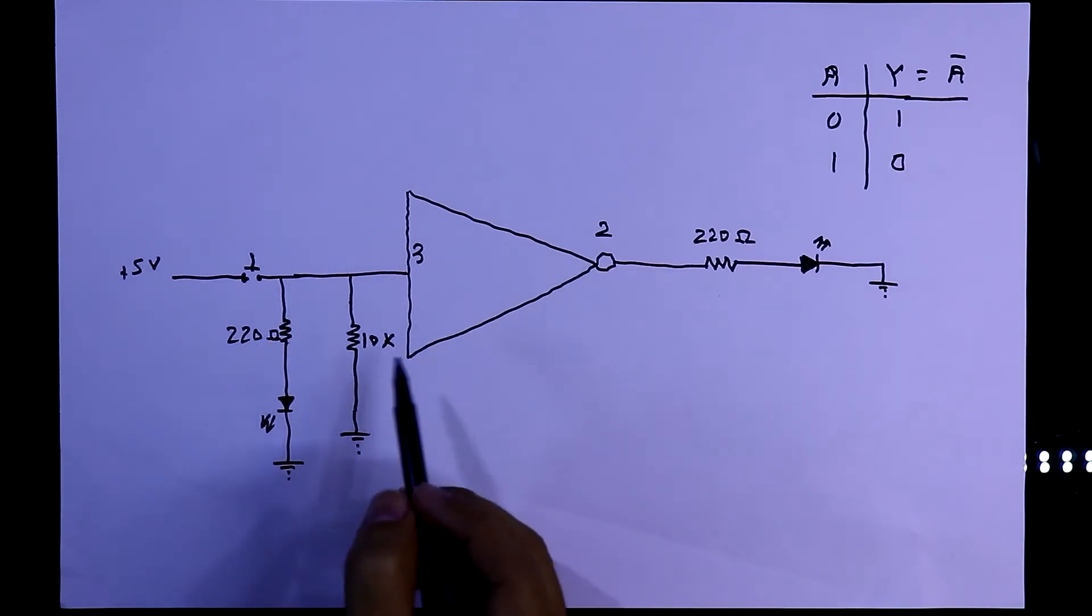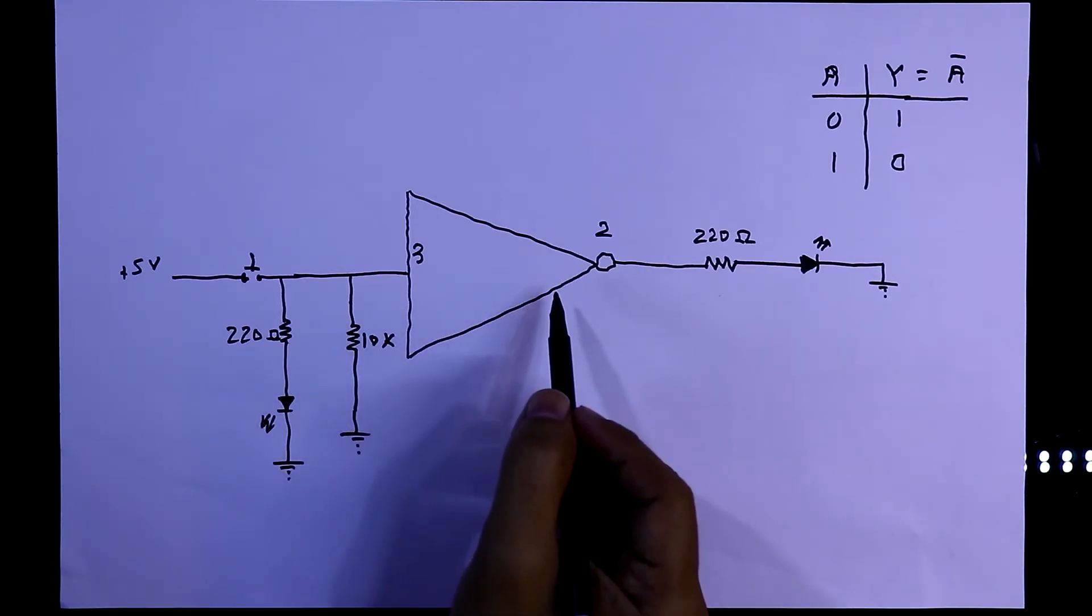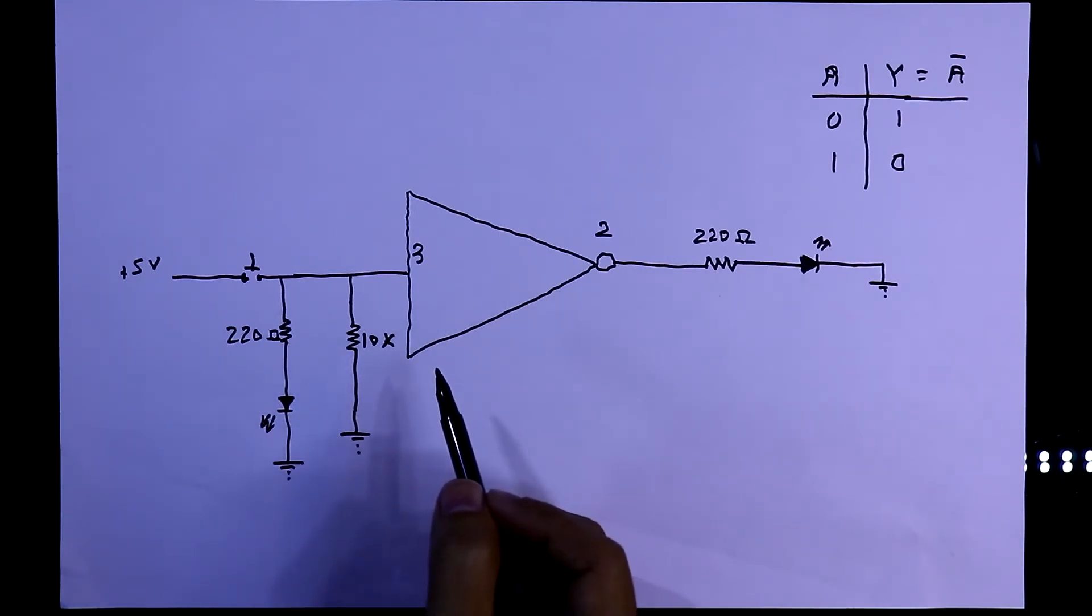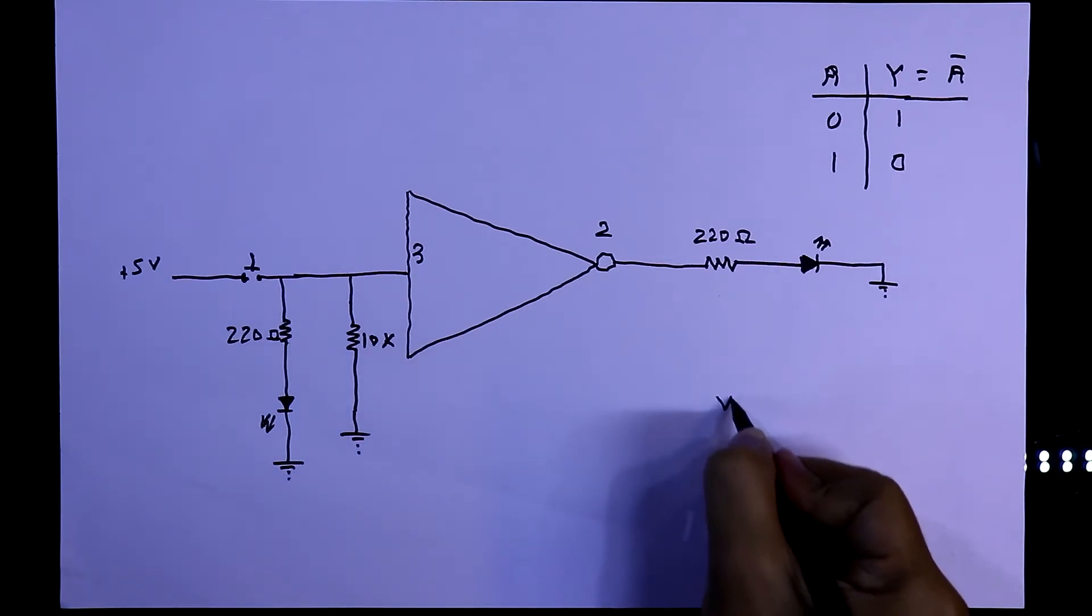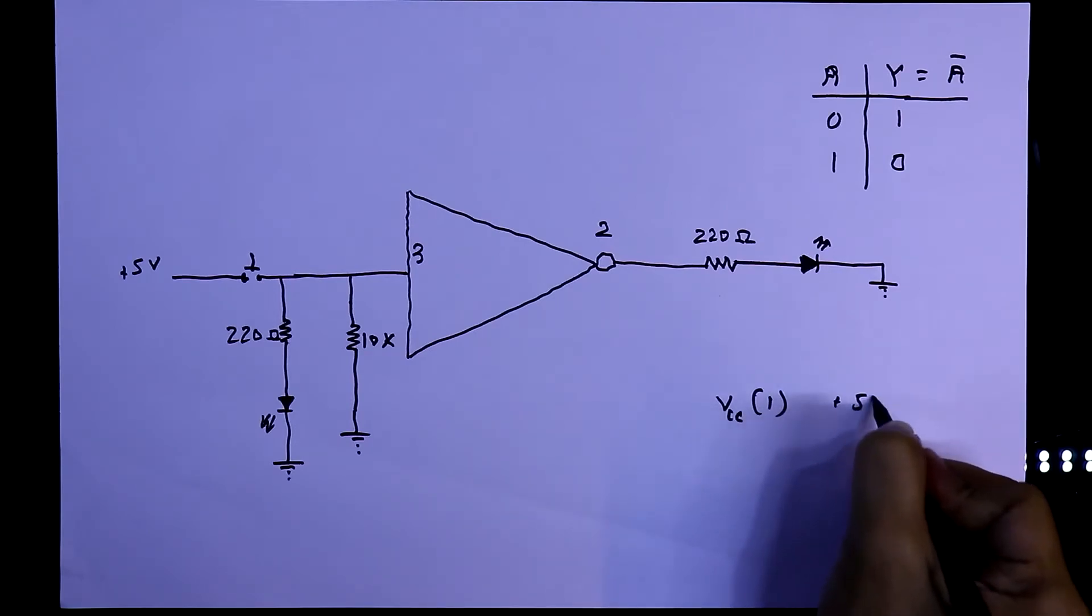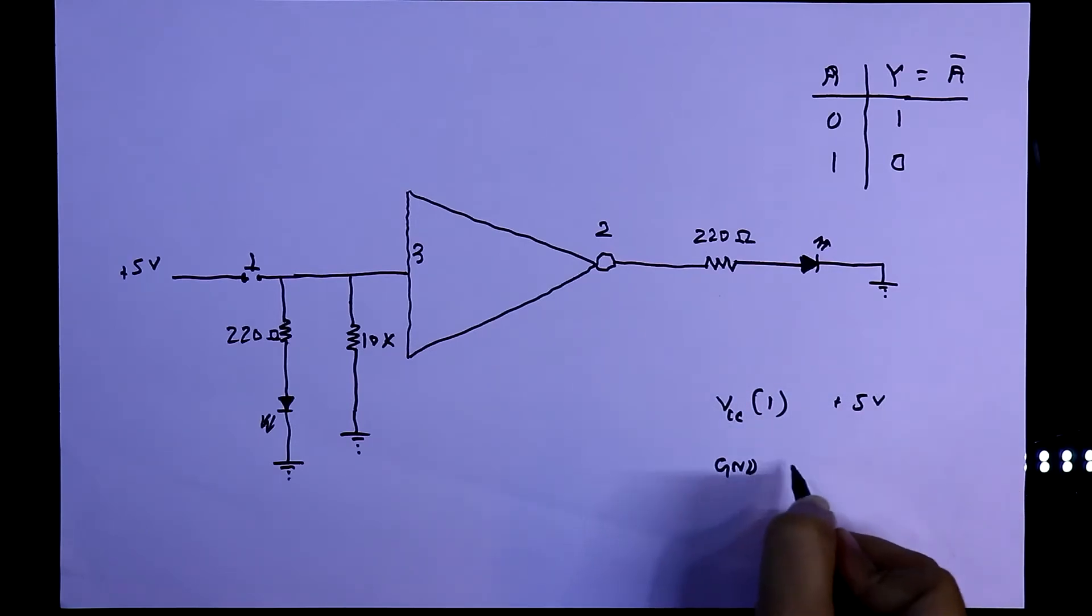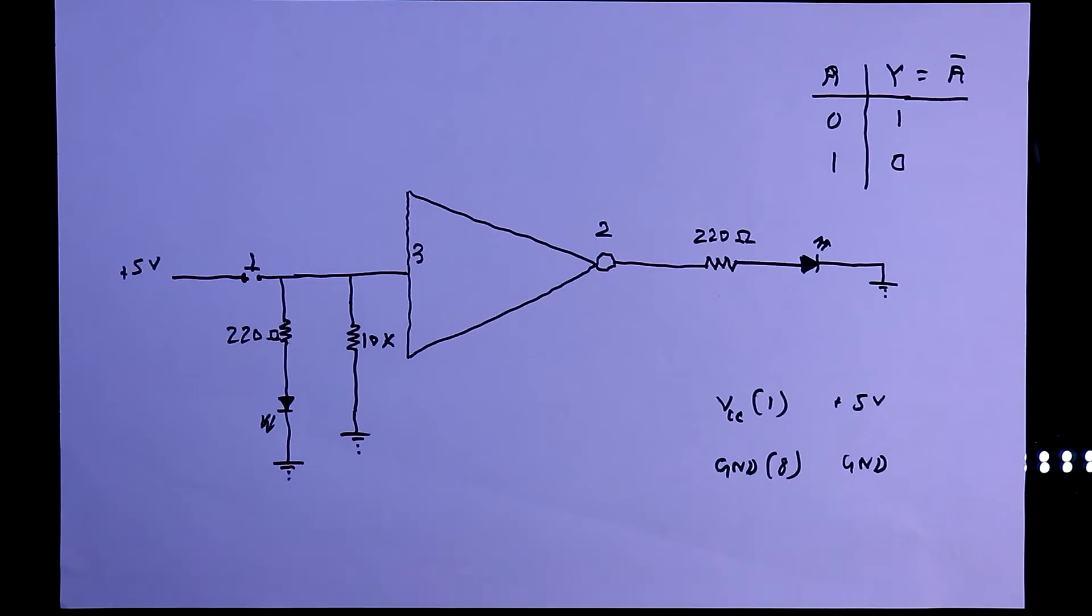And I already explained why should we use pull-down resistor with the logic IC. Link in the description below. And with the power supply, that is with pin number 1, I will use plus 5 volt. And ground, as it is pin number 8, I will connect it to the ground. So, this will be our breadboard connection.